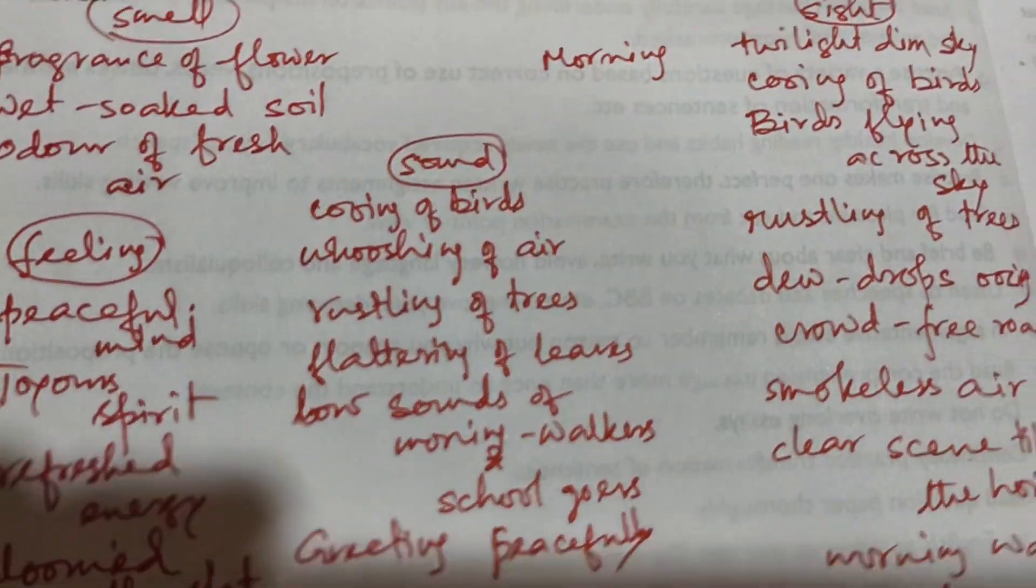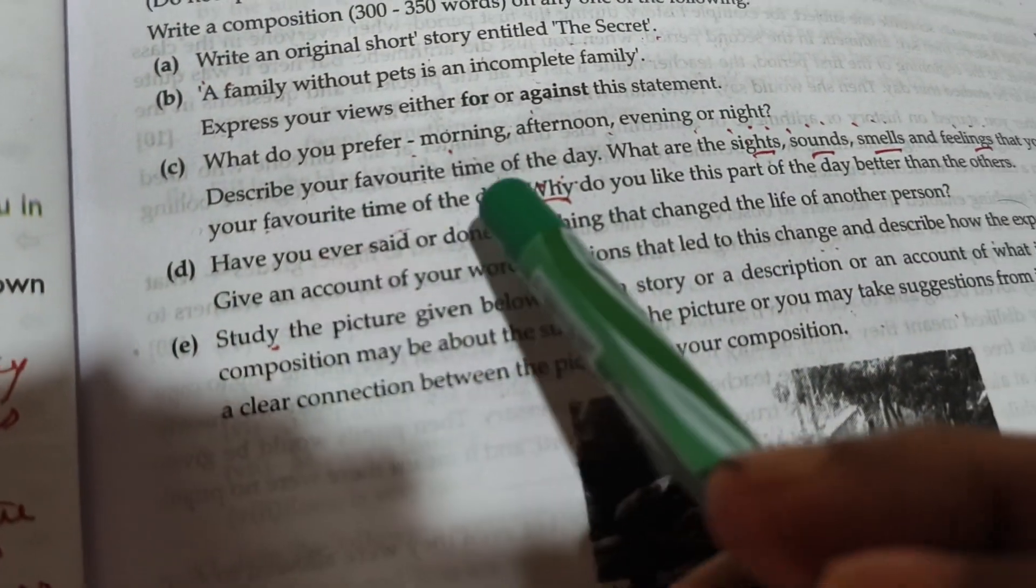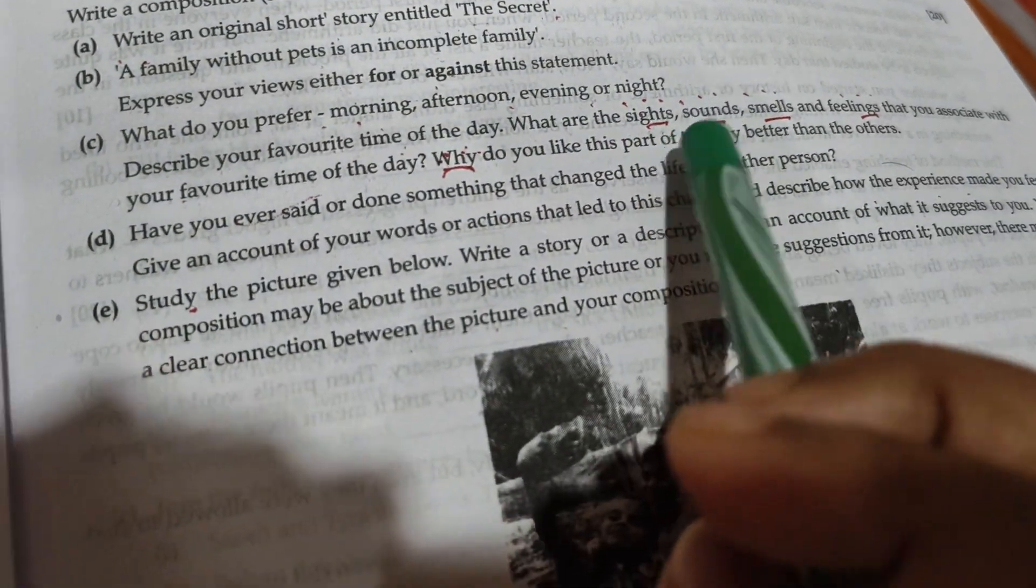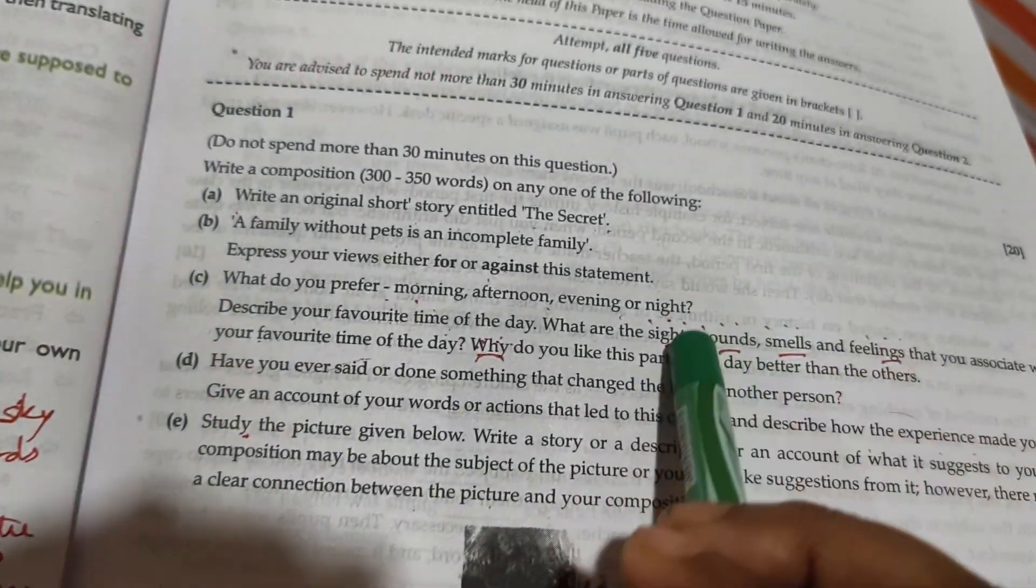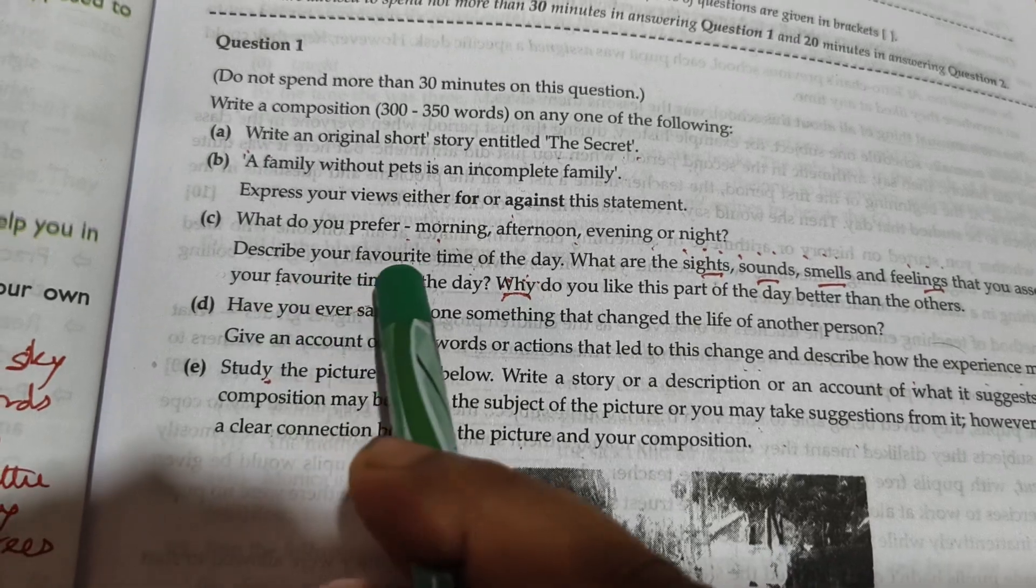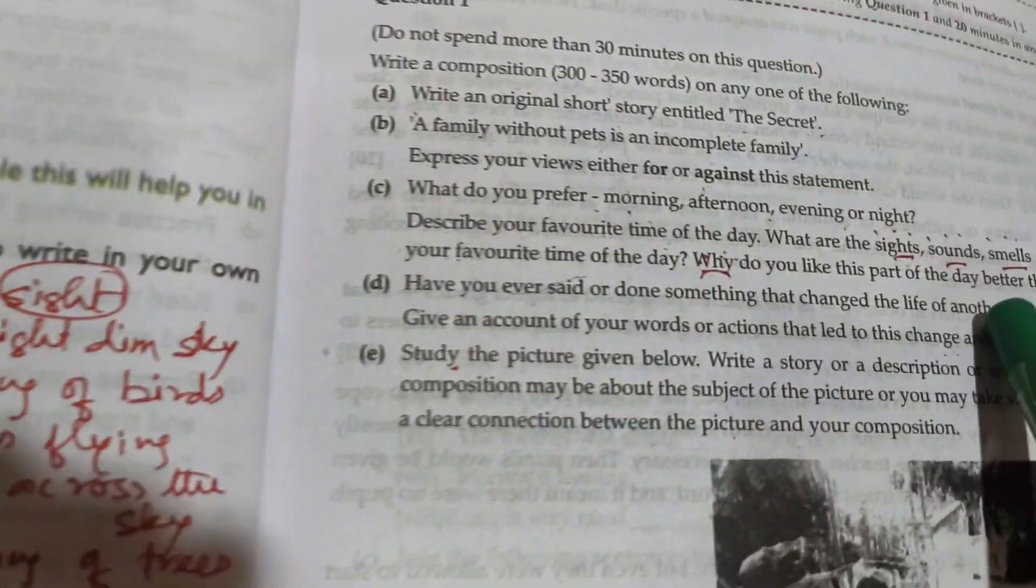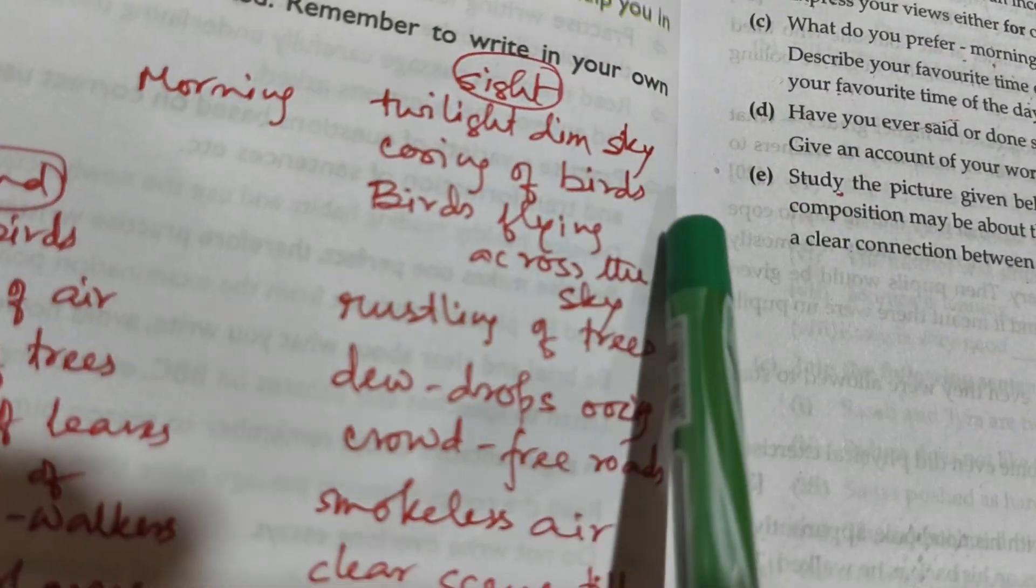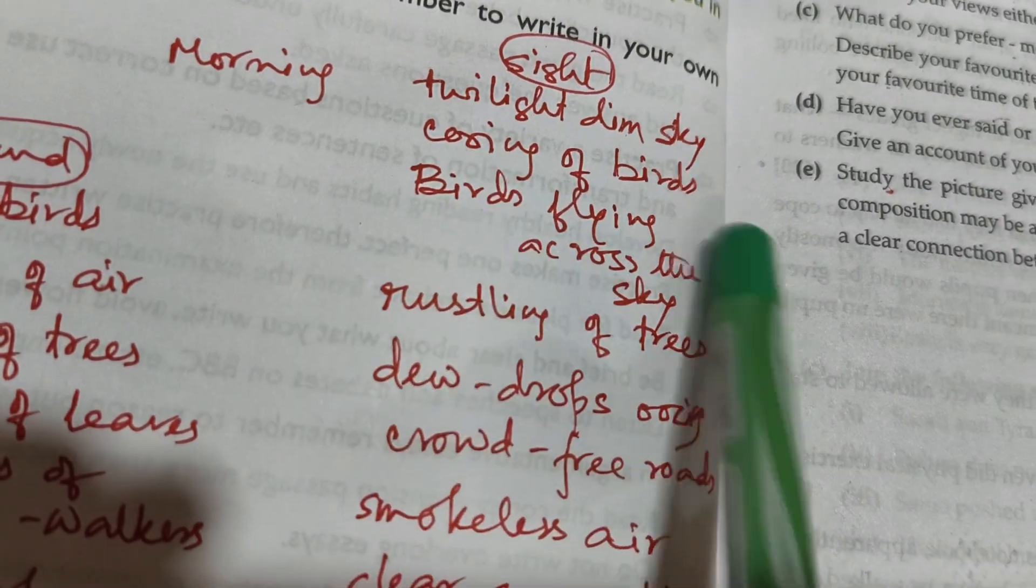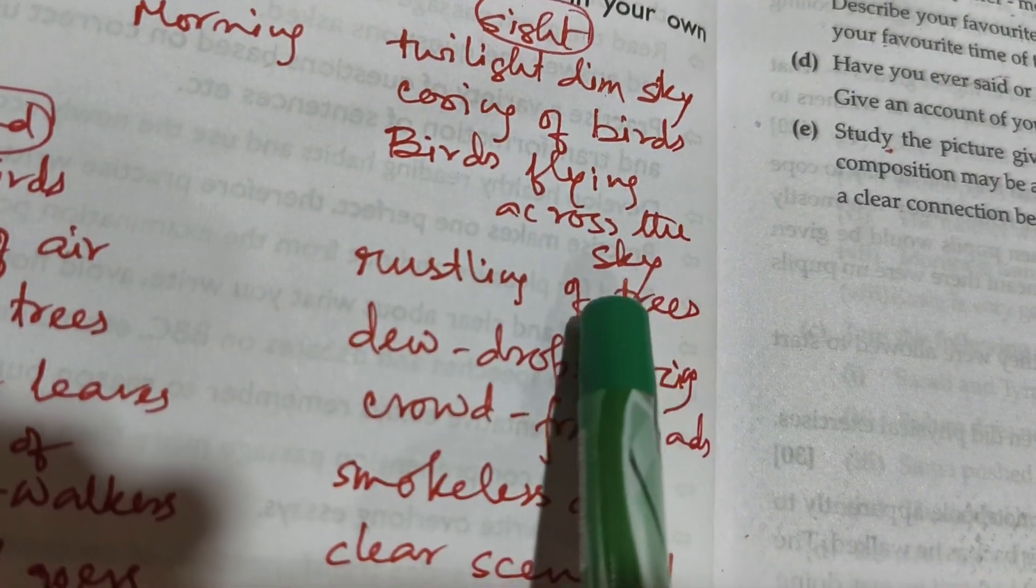Now, I will create some value points on the basis of the part which is giving us the most value points. Jaman, what is the favorite time of the day? Always. Morning. What are the sights? Twilight dim sky. Side glow ki ki deki cooing of birds. Eta cooing bat diye je flying birds flying across the sky.